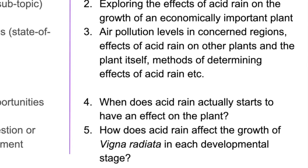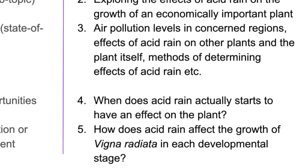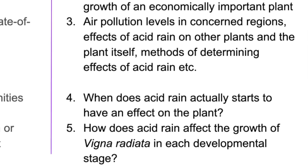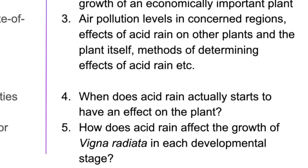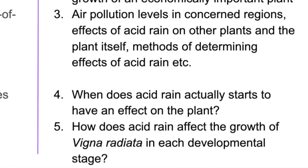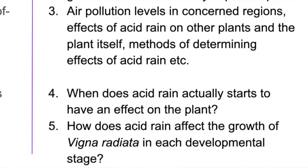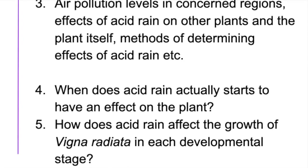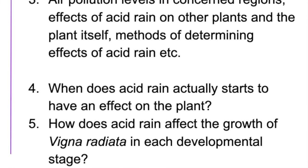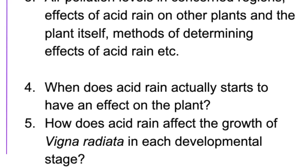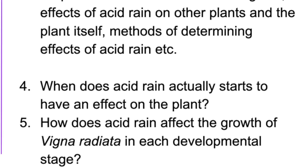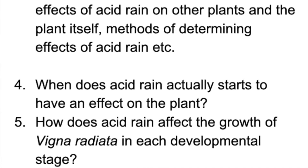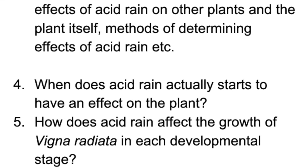Finally, we highlighted the gaps or limitations in the previous studies, such as the only parameters that were measured in mung beans before were weight as well as successful fruiting. But there were no records yet of shoot length, root length, and of course when the acid rain starts to have an effect in the whole life cycle of the plant. So we end our introduction by stating the problem that we want to tackle, which is the identification of the effects of acid rain on the mung bean at its different stages in the life cycle of the organism.